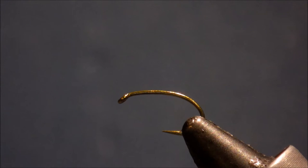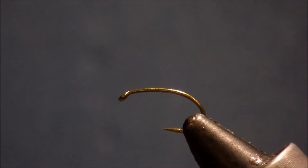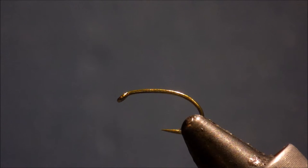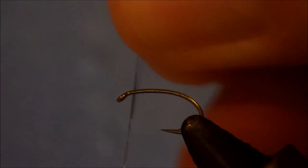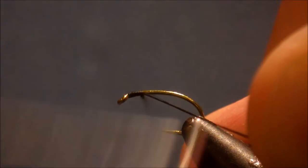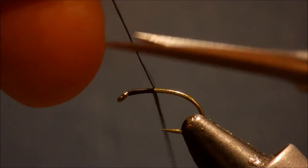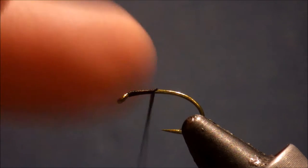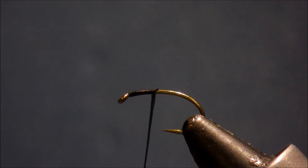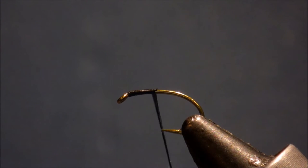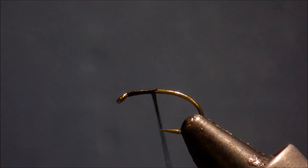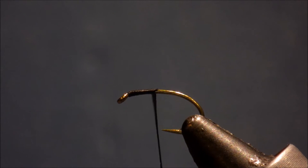So, the hook I've got in the vise is a size 16, TMC2487. You can also use a Camazan B100, which I actually prefer for this fly just because it's not a continuous bend on the shank. 16 is about as big as I would tie it, I'd maybe go to a 14, but it seems to work better in smaller sizes, 16 to 20, 22.